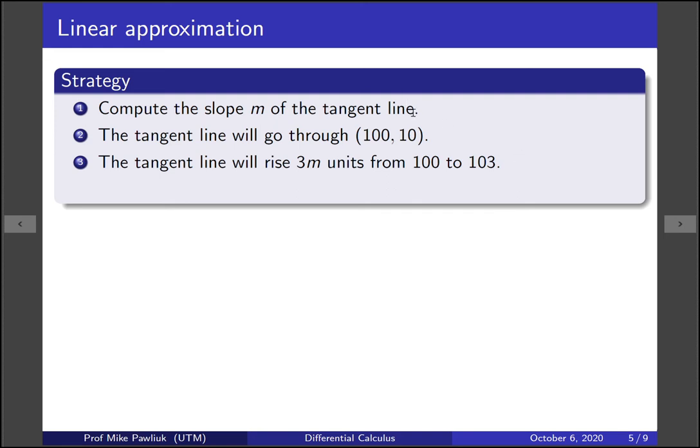So the slope is rise over run so there are three units between 100 and 103 so then our tangent line will rise 3m units. Put another way the tangent line will be at 10 plus 3 times the slope at 103.